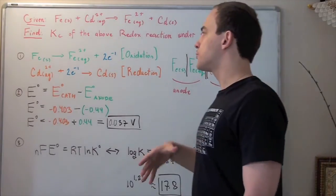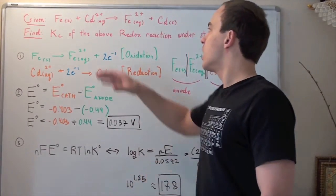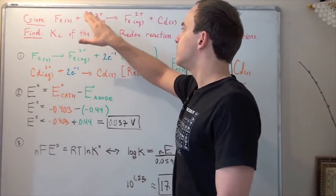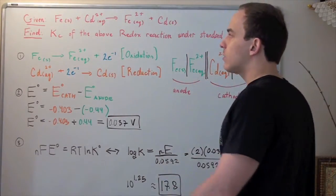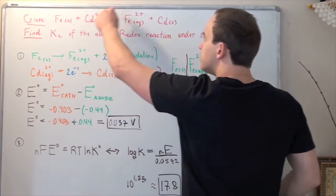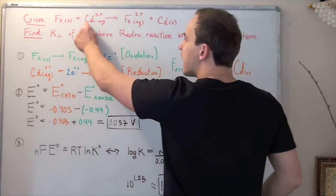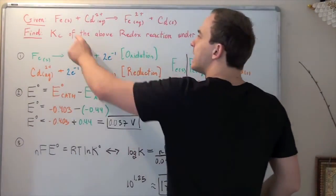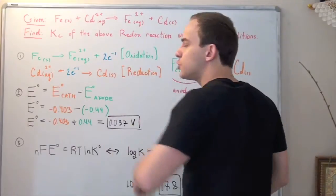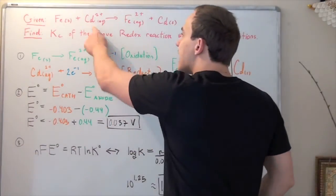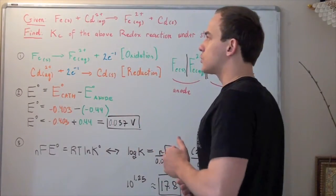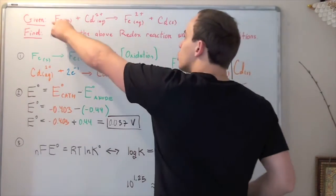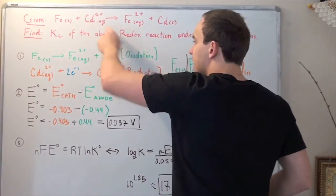Our goal is to find the equilibrium constant of the above redox reaction under standard conditions. Let's begin by writing out the two half reactions. The iron atom goes from a neutral charge to a plus two charge, while the cadmium atom goes from a plus two charge to a neutral charge. That means iron loses two electrons and cadmium gains those same two electrons. So iron is oxidized (the reducing agent) and cadmium is reduced (the oxidizing agent).